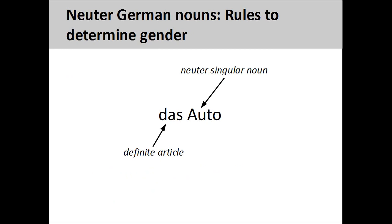The German noun 'auto,' meaning car, has a neuter grammatical gender, so its definite article is 'das.' Don't forget that it is important to memorize the definite article with the noun. Although the grammatical gender of German nouns is sometimes difficult to determine, there are some rules that can help you. Fortunately, there are just a few rules governing neuter nouns. Let's take a look at these now.